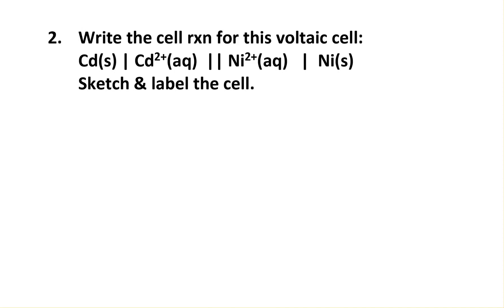Now we're going to go from the cell notation, the line notation, to drawing the cell. When we see the line notation, we know that on the left we're going to have the anode, and on the right we're going to have the cathode.